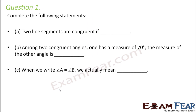Question number one: complete the following statement — two line segments are congruent if... So what is the criteria for line segments to be congruent? There is just one criteria: they should have the same length. If they have the same length, that means they are congruent.